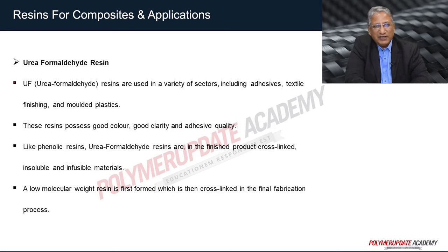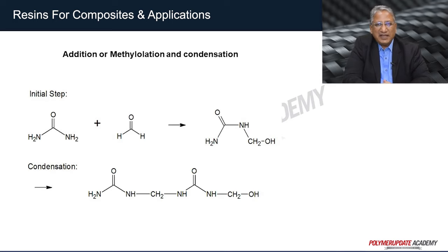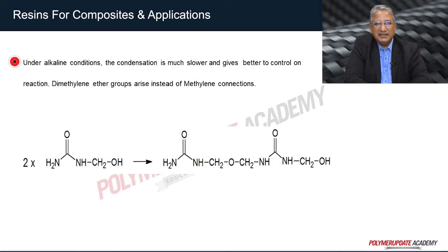Urea formaldehyde (UF) resin finds numerous applications in adhesives, textile finishing, and molded plastic industries. These resins possess good color, clarity, and adhesive quality. Like phenolic resin, urea formaldehyde resins in the finished product are crosslinked, insoluble, and infusible materials. A low molecular weight resin is first formed which is then crosslinked in the final stage of fabrication. Under alkaline conditions, condensation is much slower, giving better control on the reaction, and dimethylene ether groups are formed instead of methylene linkages.